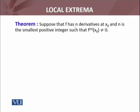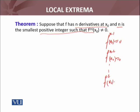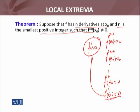The theorem states: suppose that f has n derivatives at x naught and n is the smallest positive integer such that fⁿ(x naught) ≠ 0. इसका मतलब यह है कि fⁿ⁻¹(x naught) भी 0 है, fⁿ⁻²(x naught) भी 0 है, so and so forth — f''(x naught) भी 0 है, f'(x naught) भी 0 है. तो x naught could be a critical point if f'(x naught) = 0, लेकिन may be local extrema हो या ना हो. अब next जो two statements हैं वो local extrema of f को इस fⁿ के साथ relate करती हैं.